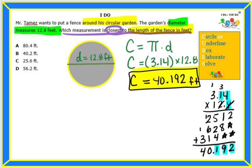Now my answer is not there exactly. But remember, it did say which measurement is closest. So if we round 40.192, we are going to be rounding to the nearest tenth. If we see all of the answers, they are to the tenth place. So we would stop here.